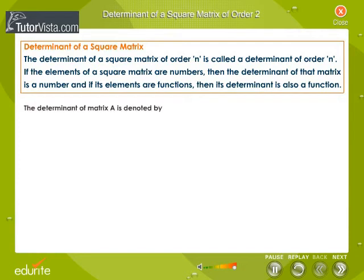The determinant of matrix A is denoted by Det A, determinant of matrix A, or determinant of AIJ.